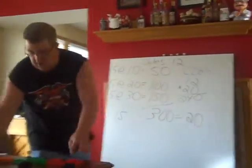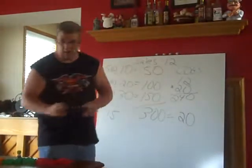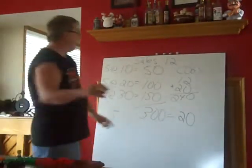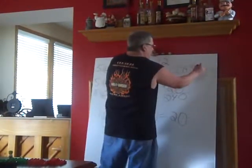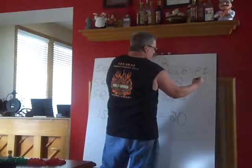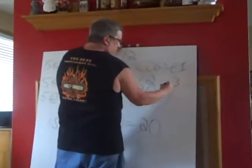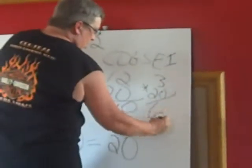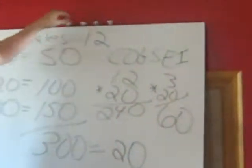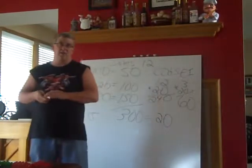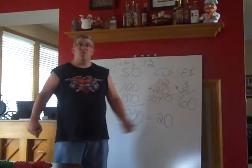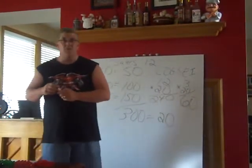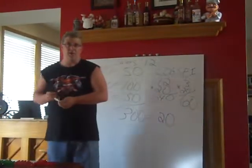We have three items left in inventory. Remember, they're all black now, so they're all at $20 a piece. So our ending inventory is going to be three items times $20 a piece, which gives us ending inventory of $60. The ending inventory goes on the balance sheet, and the cost of goods sold at $240 is going to be an expense on the income statement. So this is how we do weighted average costing.